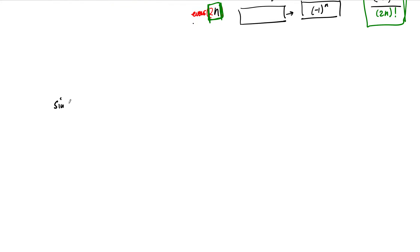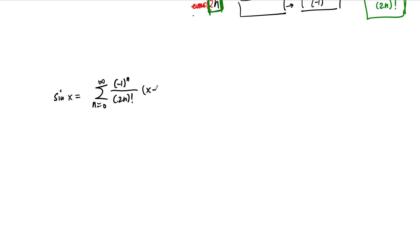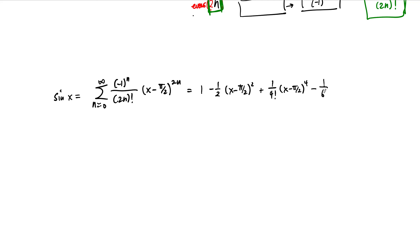So sine of x is equal to the sum — and remember, the whole idea is that it's equal near pi over two; it turns out it's equal for all real numbers — of negative one to the n over two n factorial, times x minus pi over two to the power two n. Only the even terms appear. Writing out the first few terms: when n is zero we get just one; the next term is minus one half times x minus pi over two squared; then plus one over four factorial times x minus pi over two to the fourth; then minus one over six factorial times x minus pi over two to the sixth; and so on. Taylor series for sine of x centered at pi over two.